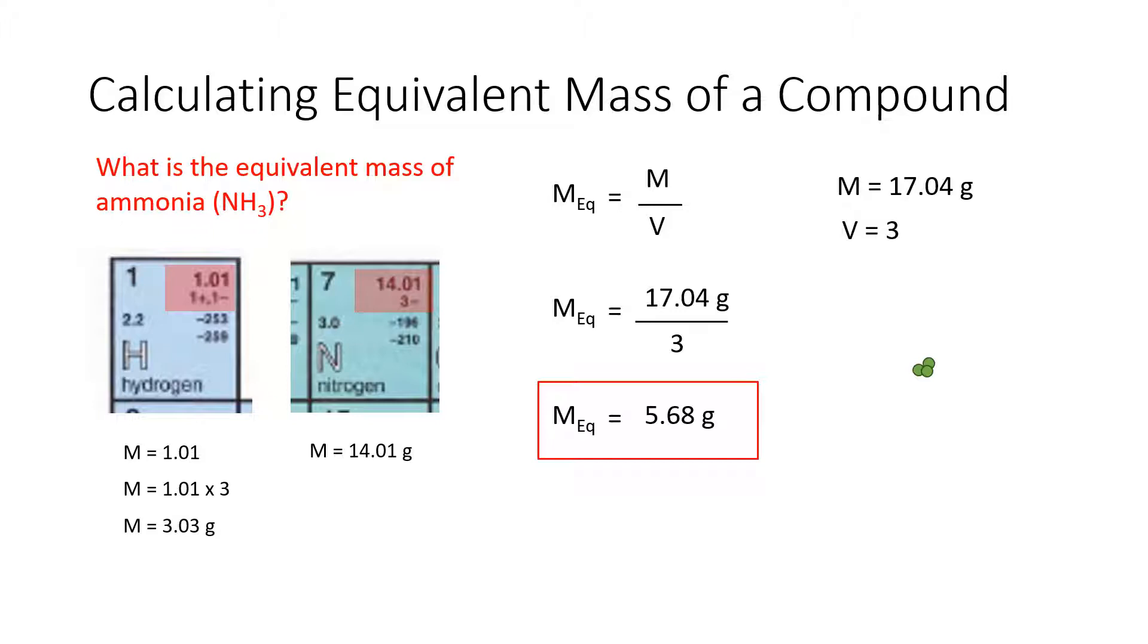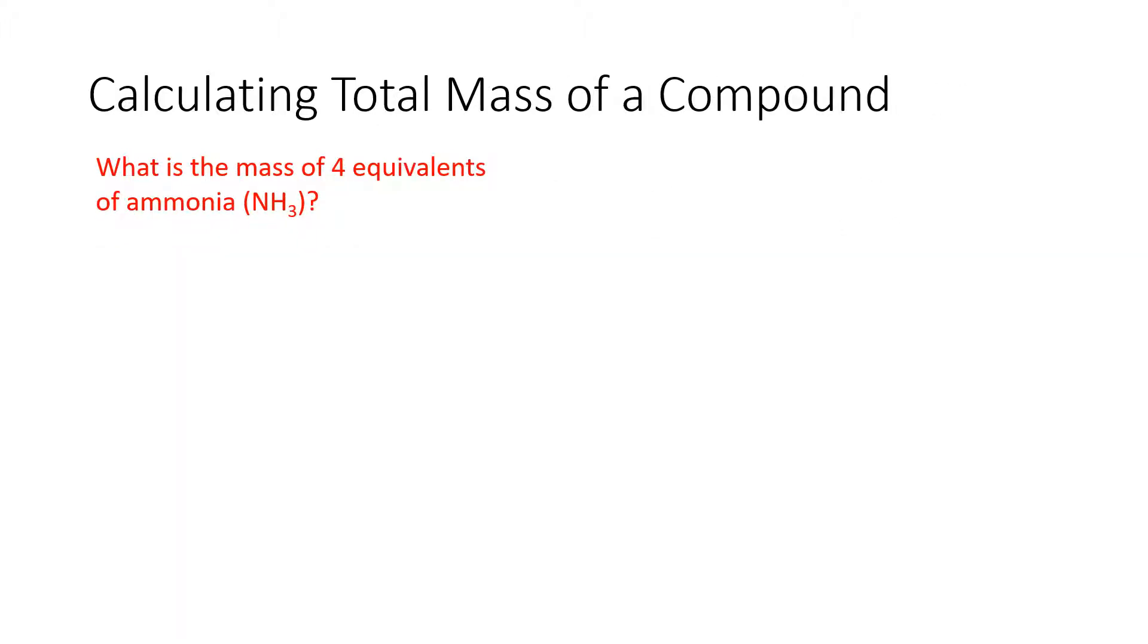So if we look compared to iridium, that small little bit of ammonia, how much is going to react is a very small amount, it's 5.68 grams. Now that we've been able to calculate the equivalent mass of a compound, what if we had multiple equivalents, could we find its total mass? Of course we can.